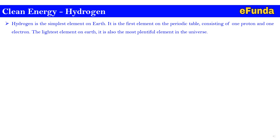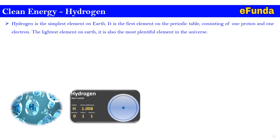Clean energy hydrogen: hydrogen is the simplest element on Earth and is the first element on the periodic table, consisting of one proton and one electron. It is a non-metal and the lightest element on Earth; it is also the most plentiful element in the universe. Despite its abundance, hydrogen doesn't normally combine with itself to form hydrogen gas. Instead, it is normally found in water (H2O), ammonia gas (NH3), or hydrocarbons such as natural gas and petroleum products.